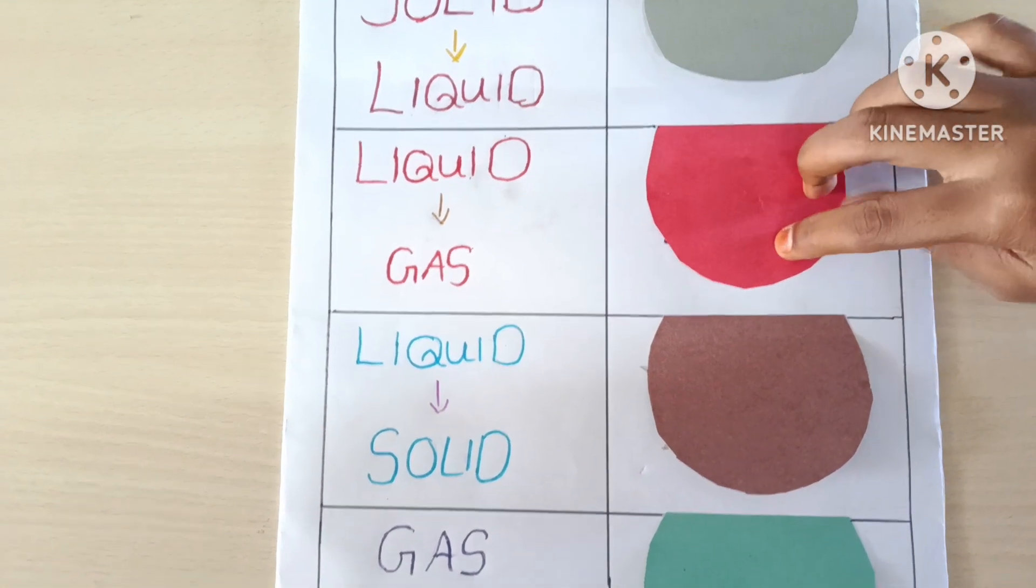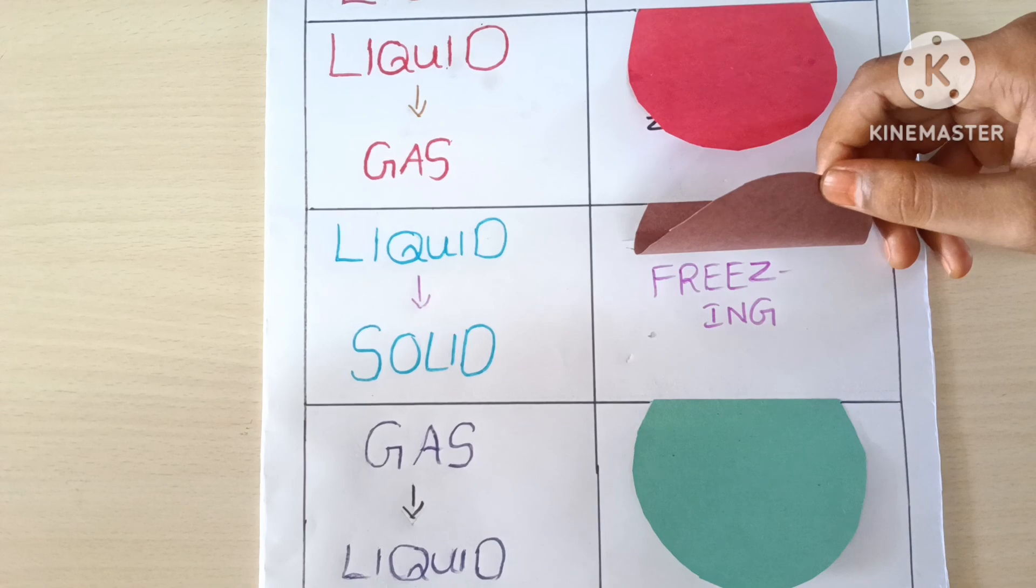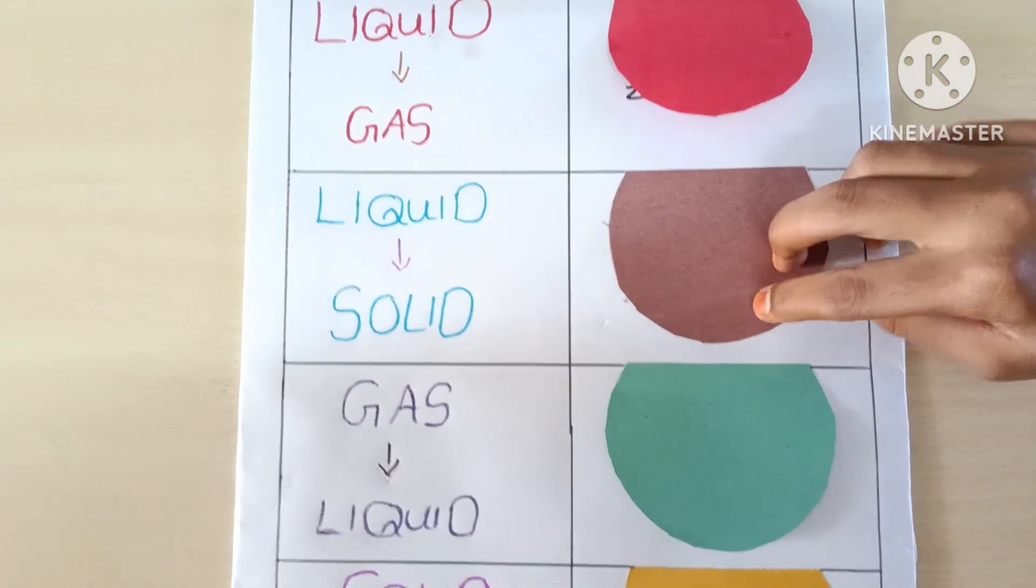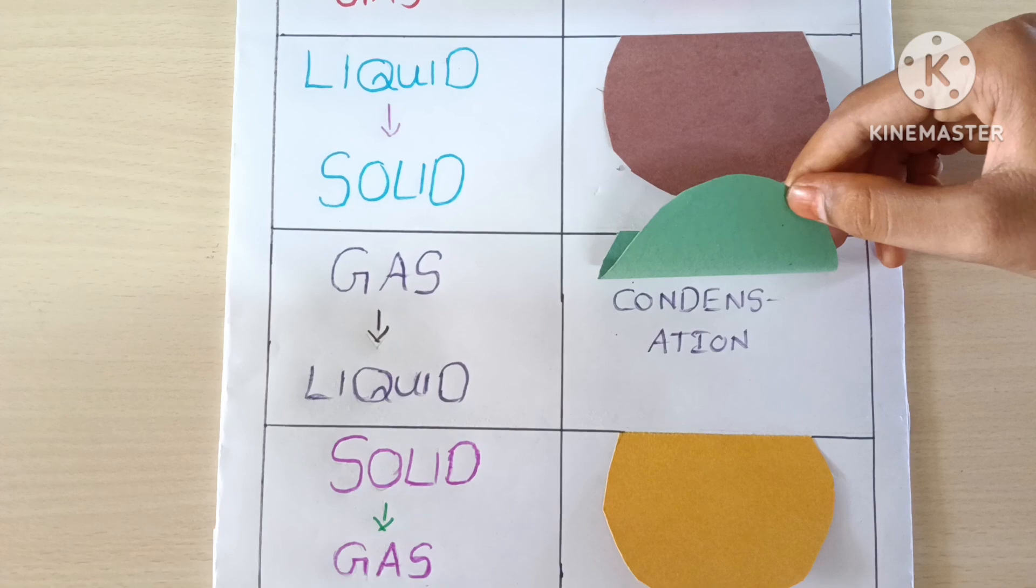Conversion from liquid to solid is called freezing. Conversion from gas to liquid is called condensation.